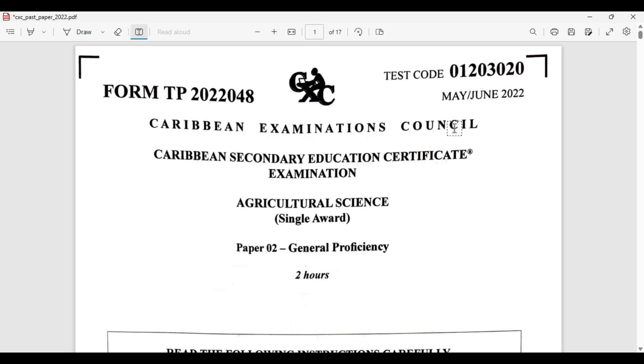Welcome to CSEC Biology TCP. I am Mr. Wilson from the TCP Academy. Today we are going to be looking at the May-June 2022 Agricultural Science Single Award Paper. We are going to be looking at question number 4 and then we are going to be doing applications on number 5 and that sort of thing.